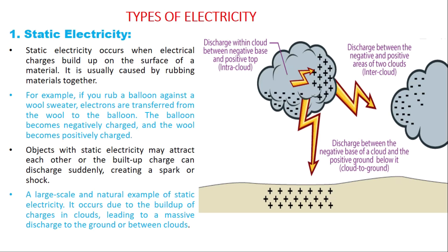This implies that the body that loses electrons becomes positively charged — it will have more protons, which are positively charged, than electrons. And the body that gains electrons will have more negative charges compared to the number of protons, giving it an overall negative charge.